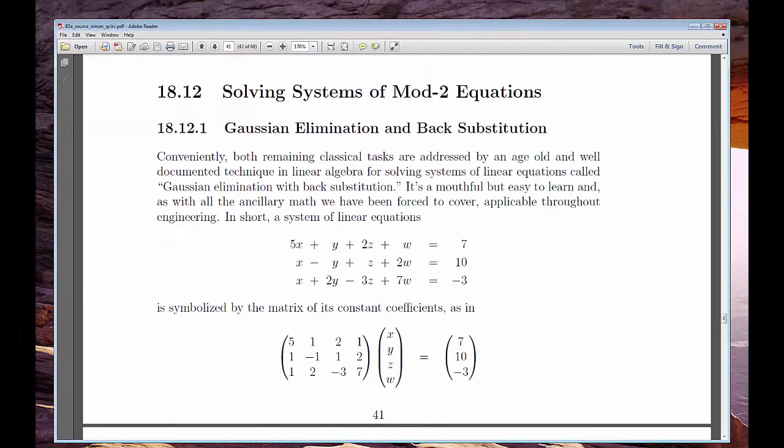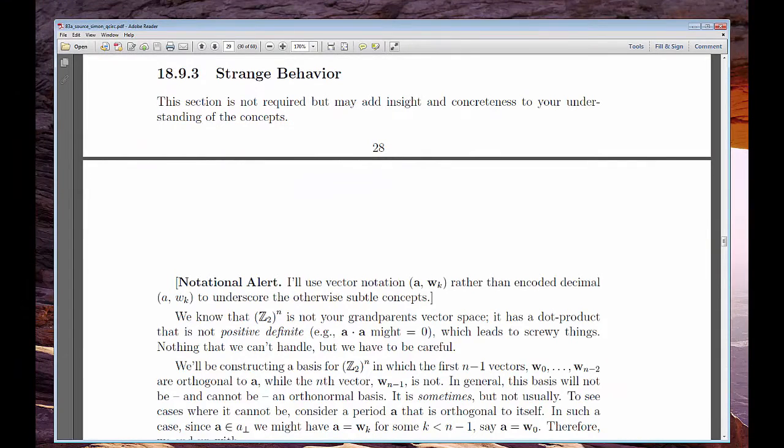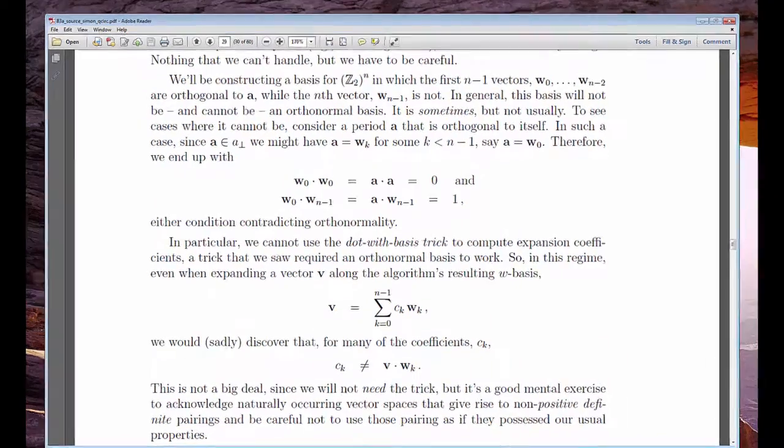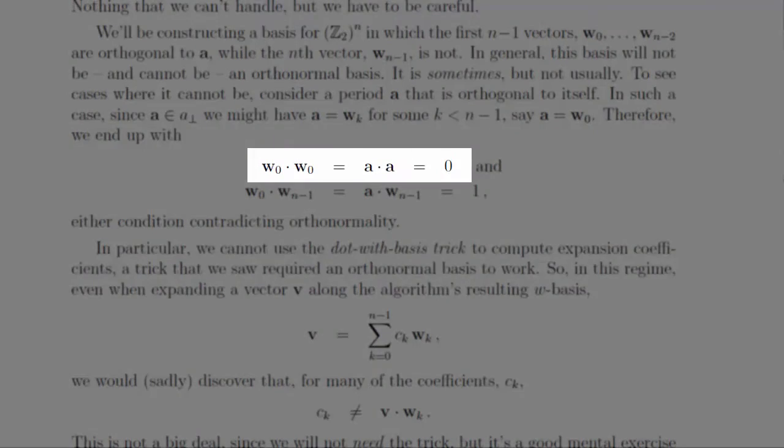Those last couple moves may have sounded like standard algebra to some of you, but actually there's some touchy issues that have to be handled with care. You see, everything we're doing is in that funny mod 2 vector space with a strange inner product, where, for example, half the vector space's vectors are orthogonal to themselves.